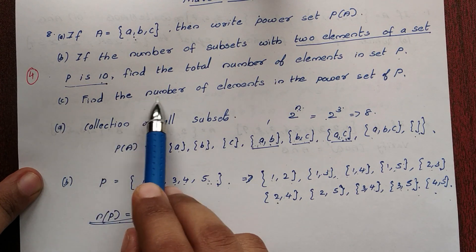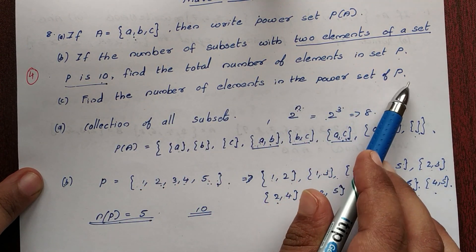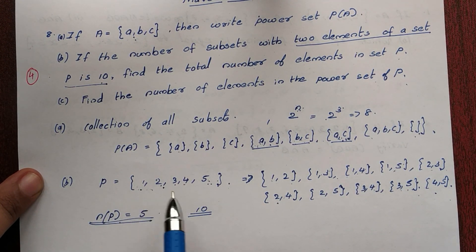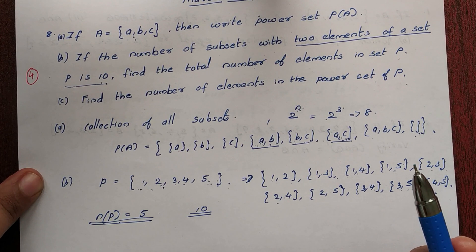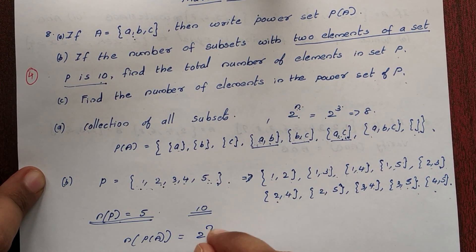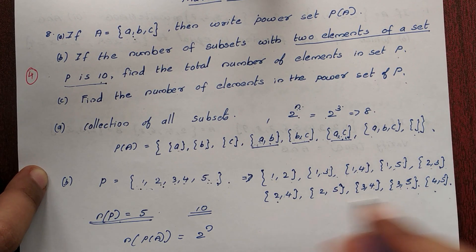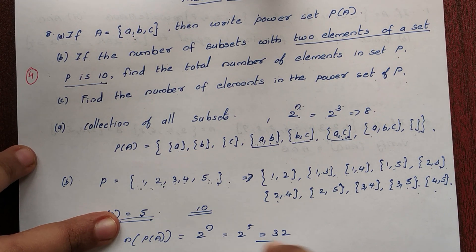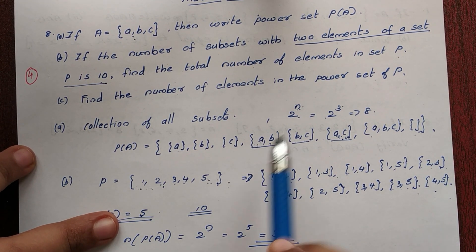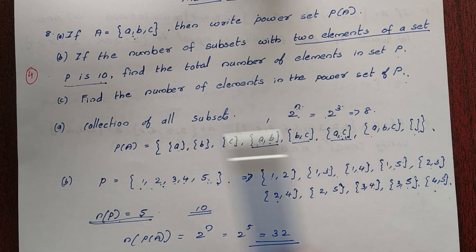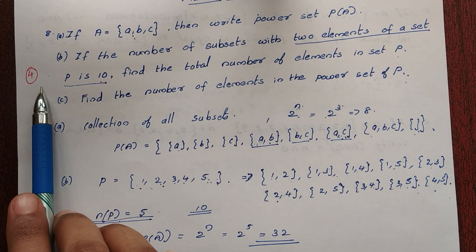Third question: find the number of elements in the power set of P. The power set of P has 2 raised to n elements, where n is the number of elements. Here n is 5, so 2 raised to 5 equals 32. There are 32 elements in the power set. This is a 4 marks question.